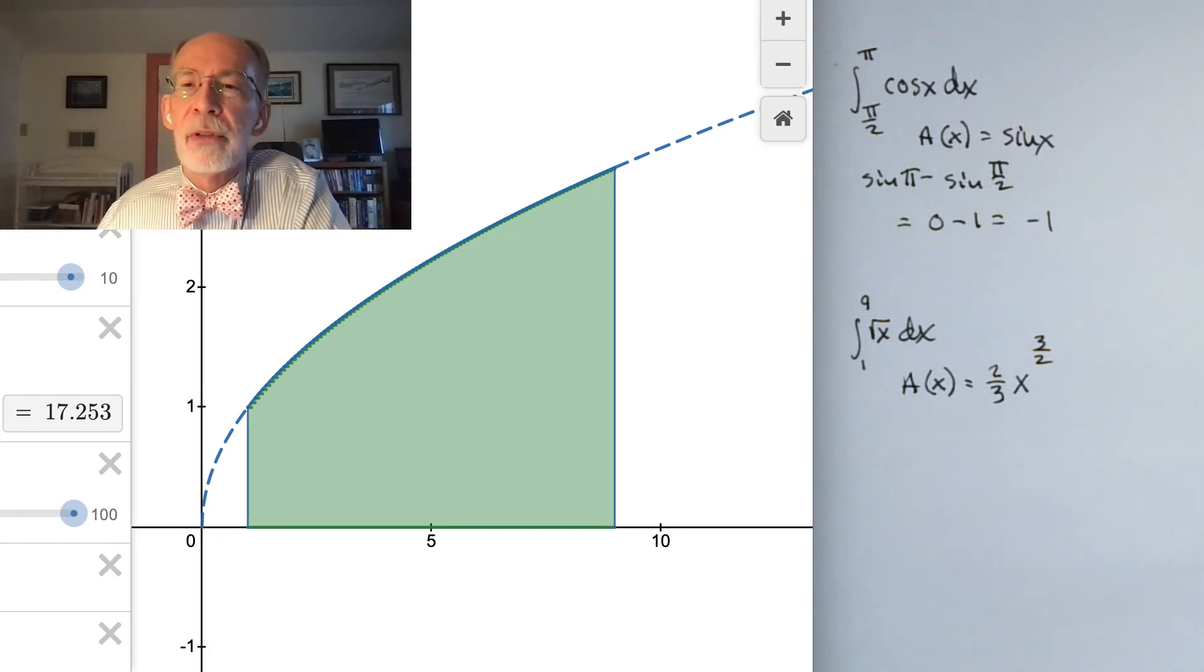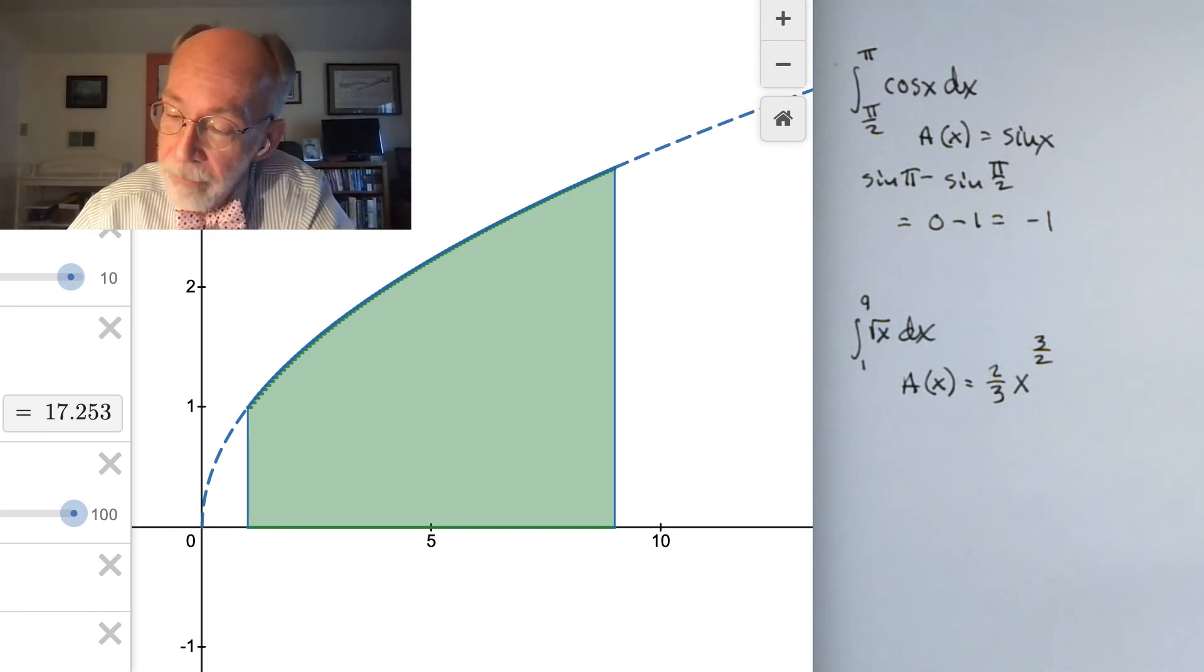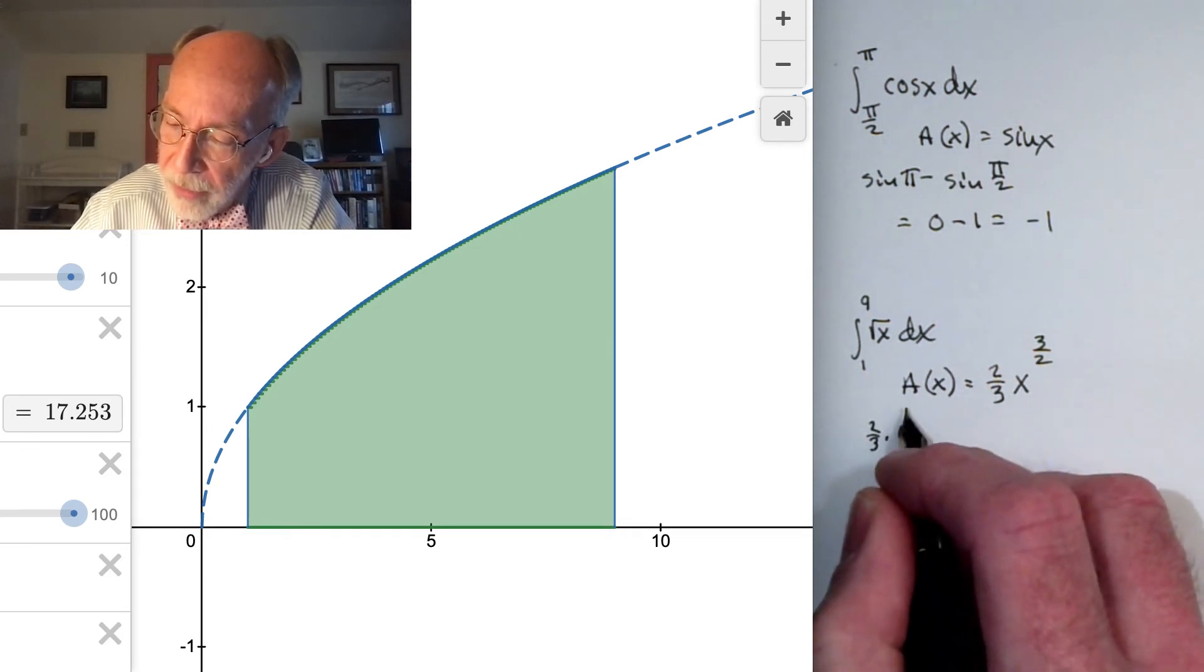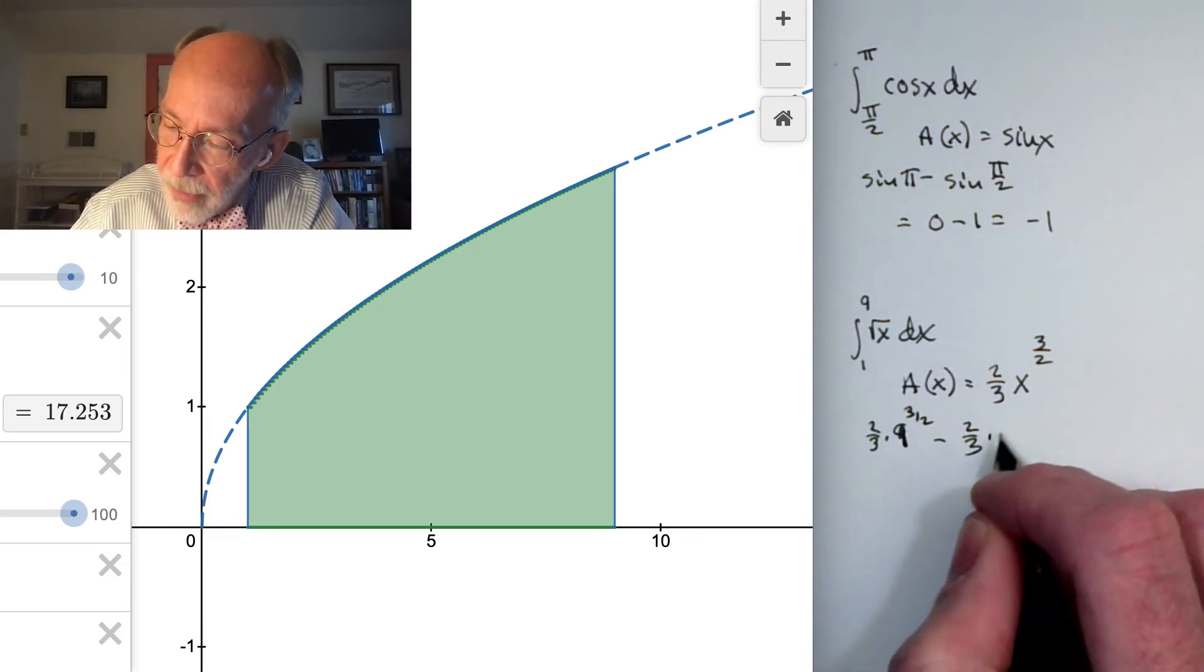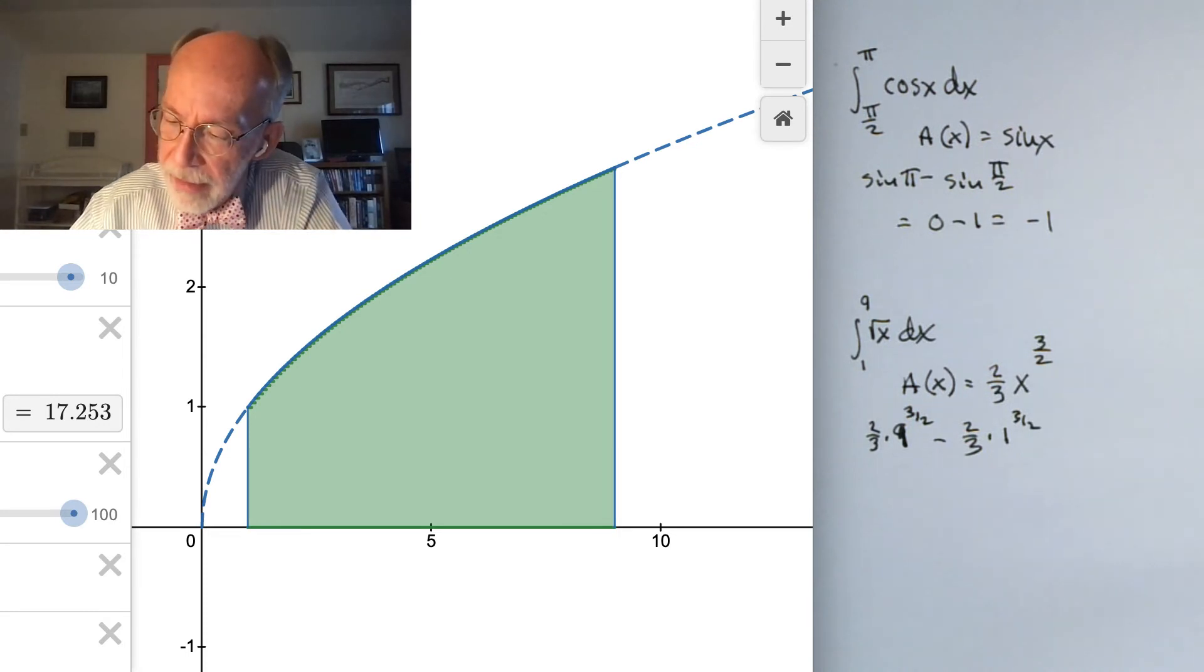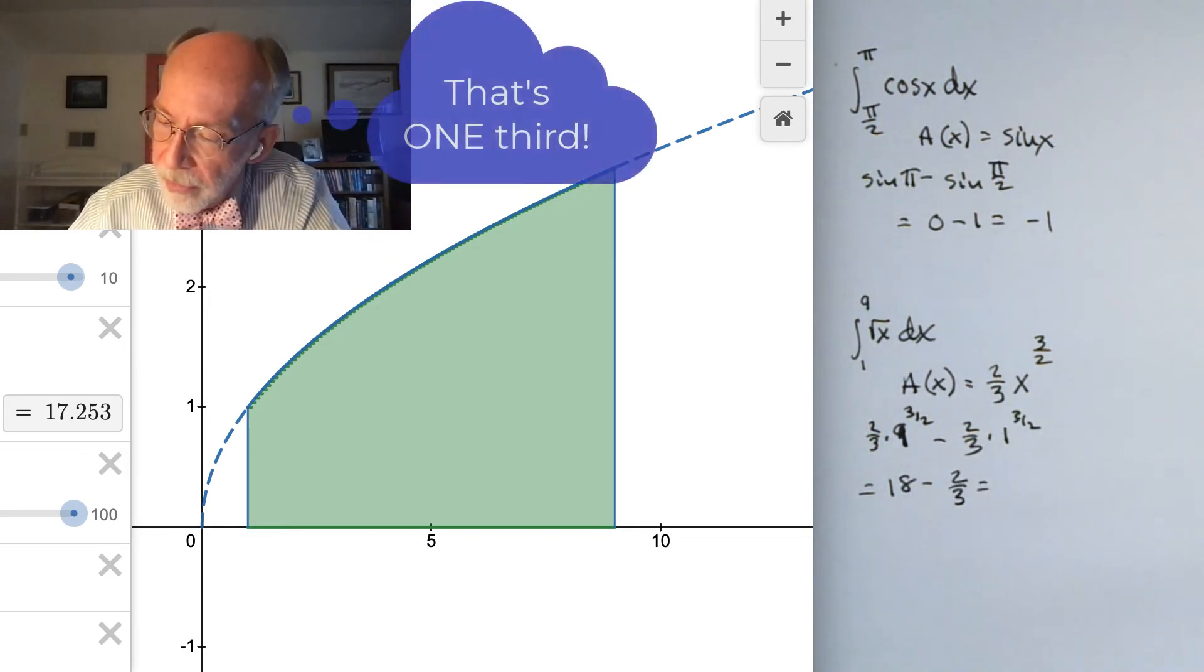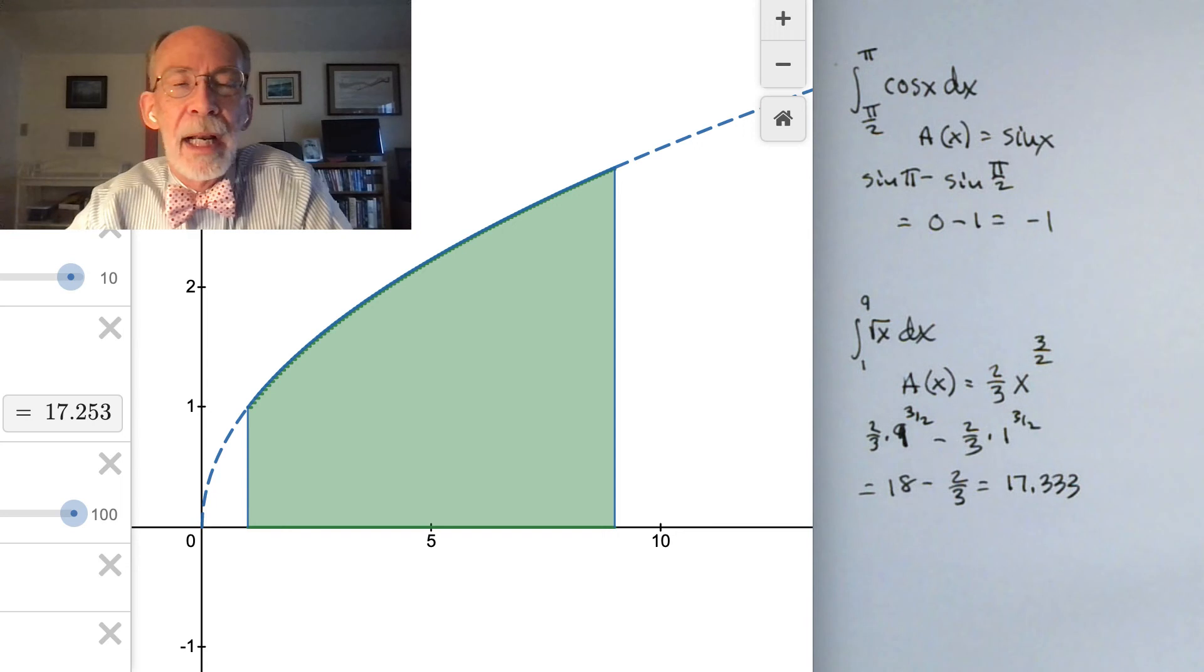So let's ask ourselves, if I plug 9 into this and I plug 1 into this and I subtract, do I get about 17 and change? Well let's see. So 2/3 times 9 to the 3/2 minus 2/3 times 1 to the 3/2. Let's see. 9 to the 3/2 is 27, divided by 3 is 9 again, times 2 is 18, minus 2/3 is going to be 17 and 2/3, or about 17.333.